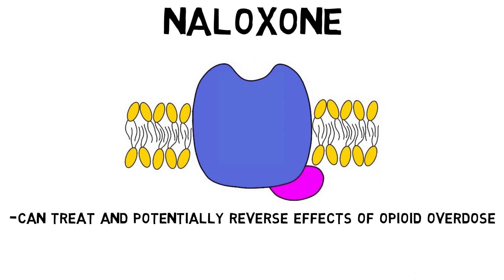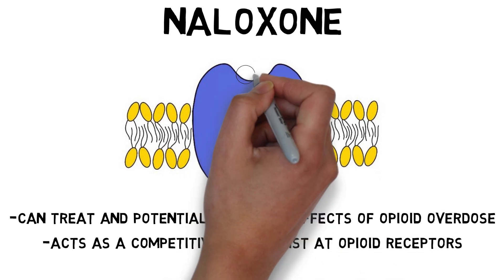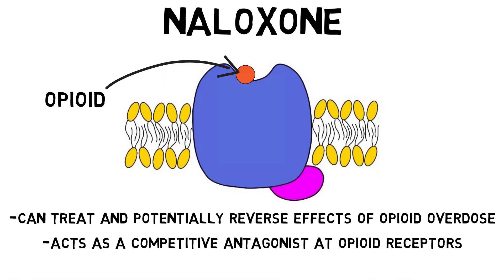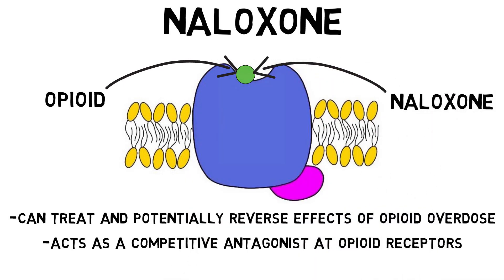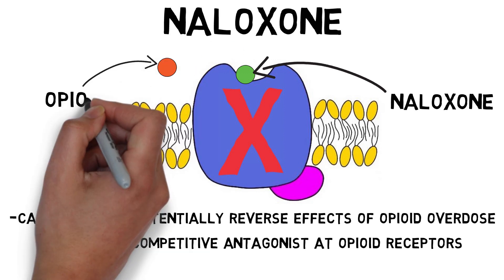The drug is a competitive antagonist at opioid receptors, which means that it works by binding to the same receptors that opioid drugs bind to, but instead of activating those receptors like opioid drugs, naloxone blocks activity at them. Naloxone also causes opioid drugs that are already attached to the receptor to be displaced.